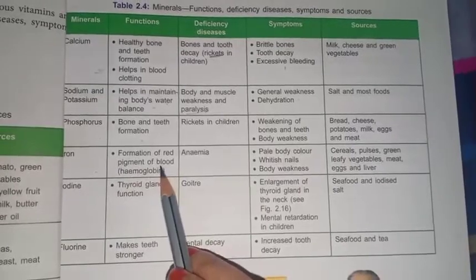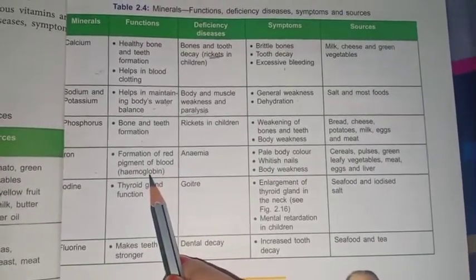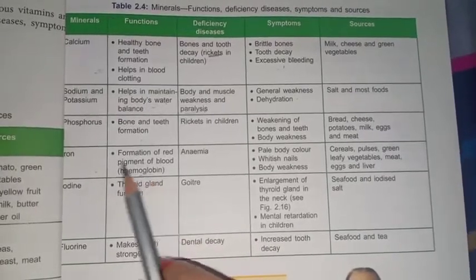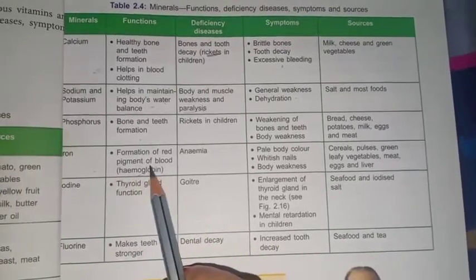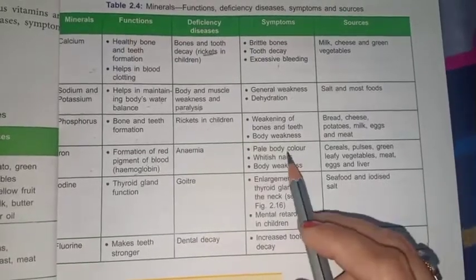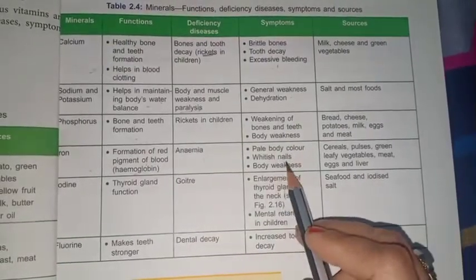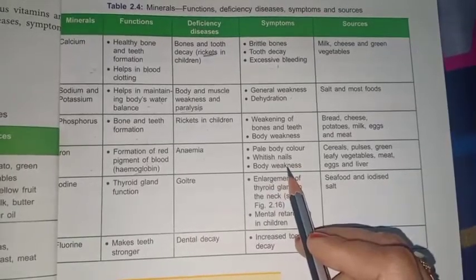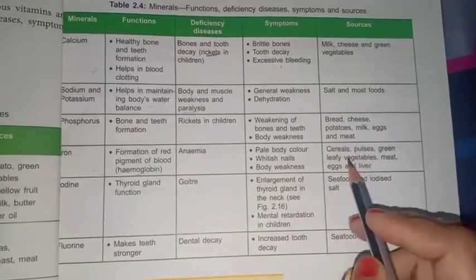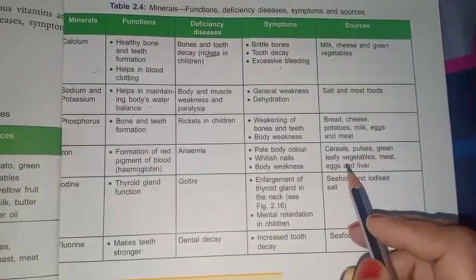Next we have iron. Iron helps in the formation of the red pigment hemoglobin, which gives red color to the blood. Its deficiency causes anemia. Symptoms are pale body color, whitish nails, and body weakness. Its sources are cereals, pulses, and vegetables.